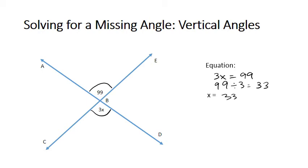And now I'm going back to solve for my missing angle here. So that is 3x, so 3 times 33 equals 99 degrees here. And again I'm checking to make sure that that makes sense. 99 is the same as 99. That's it for solving vertical angles.